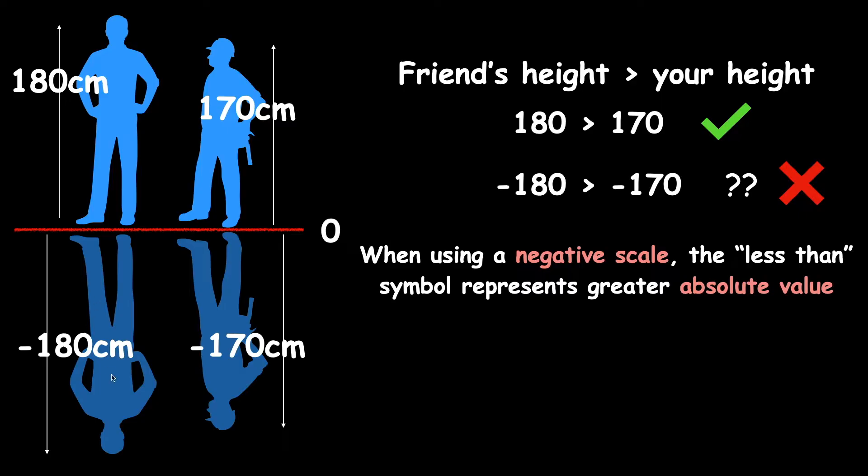So even though clearly in this example his reflection has a greater length than yours, when we represent that on a negative scale, the number we give to it, negative 180, it's less than negative 170. So the correct inequality here is negative 180 is less than negative 170.